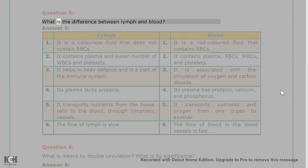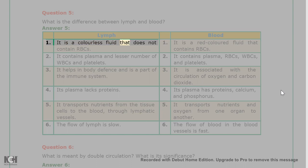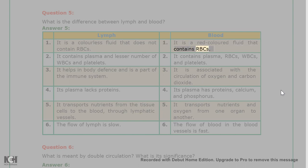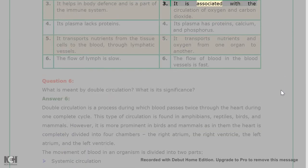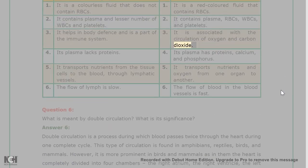Question 5: What is the difference between lymph and blood? Answer 5: 1. Lymph is a colorless fluid that does not contain RBCs; blood is a red-colored fluid that contains RBCs. 2. Lymph contains plasma and a lesser number of WBCs and platelets; blood contains plasma, RBCs, WBCs, and platelets. 3. Lymph helps in body defense and is part of the immune system; blood is associated with the circulation of oxygen and carbon dioxide.